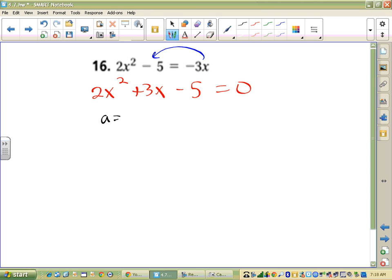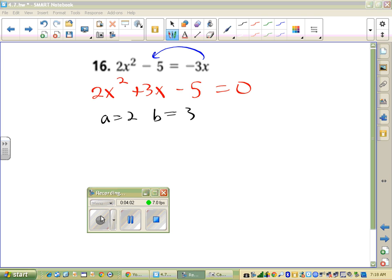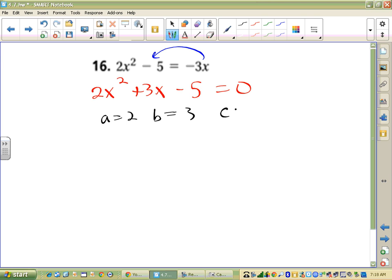So in this problem, my a is 2, my b is 3. So b is 3 and c is negative 5.